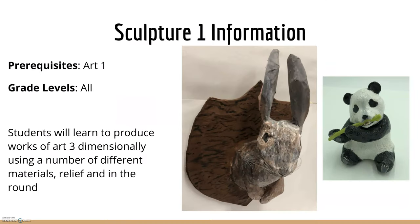Sculpture 1 requires Art 1 or Advanced Art 1 as a prerequisite and is open to all grade levels. Students will learn how to produce works of art in three dimensions using a number of different mediums, reliefs, and in-round sculptures. Some of the mediums you may use are cardboard, foam core, clay, plaster, and paper mache — it depends on the topic and what you need to complete.